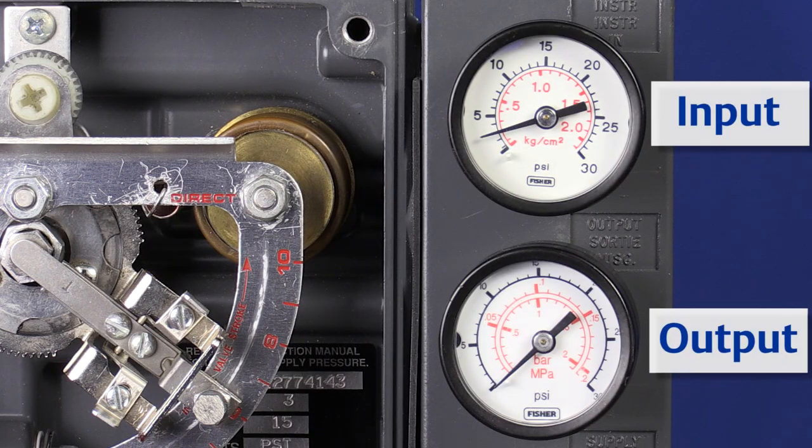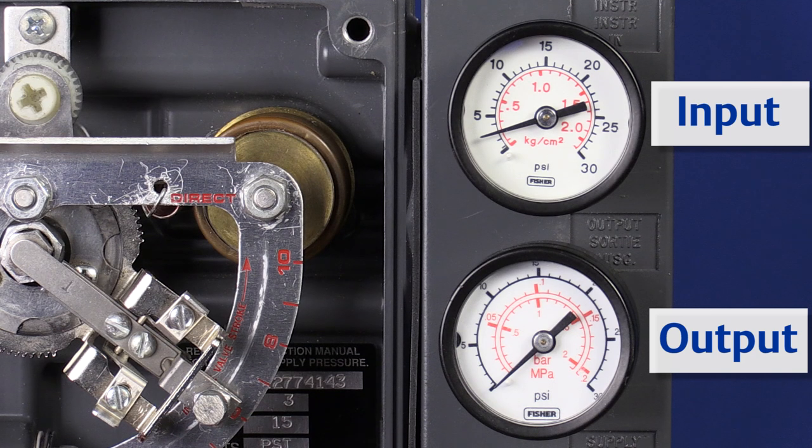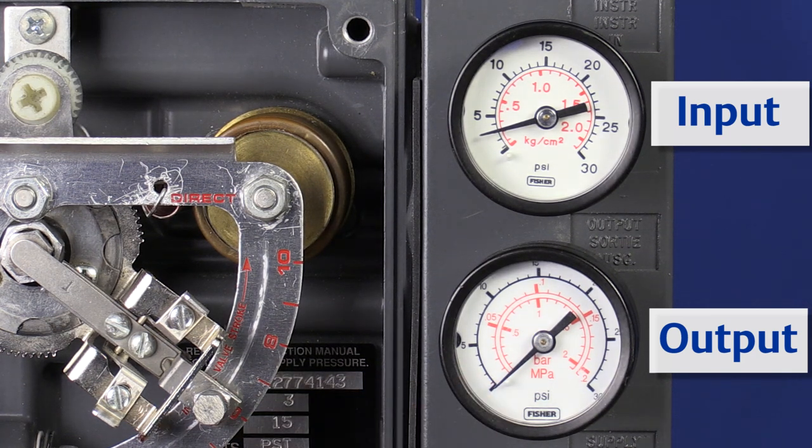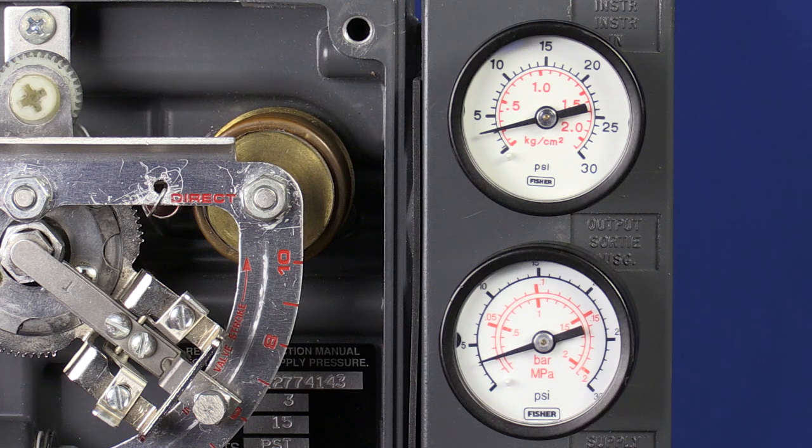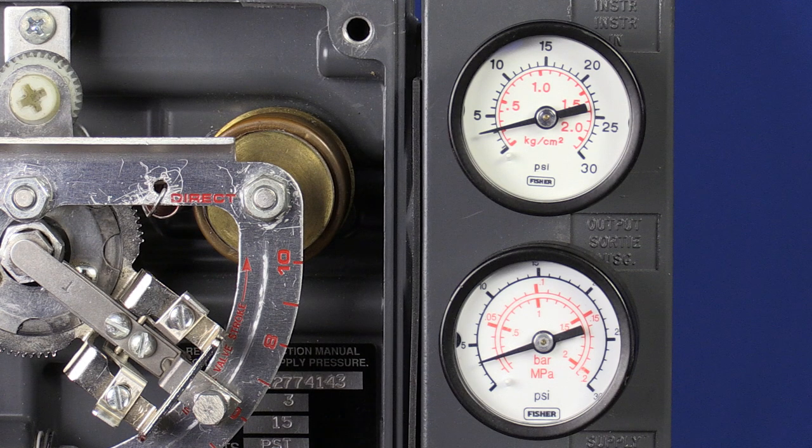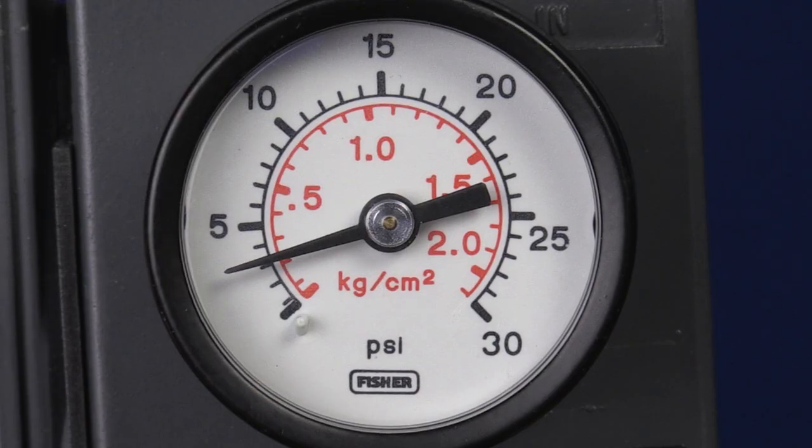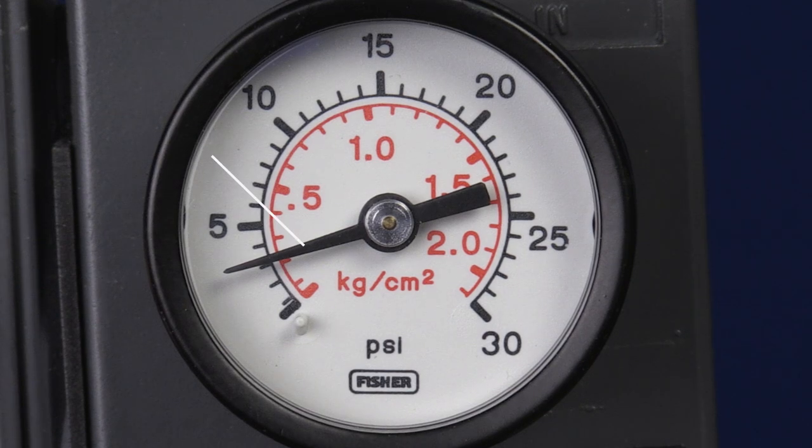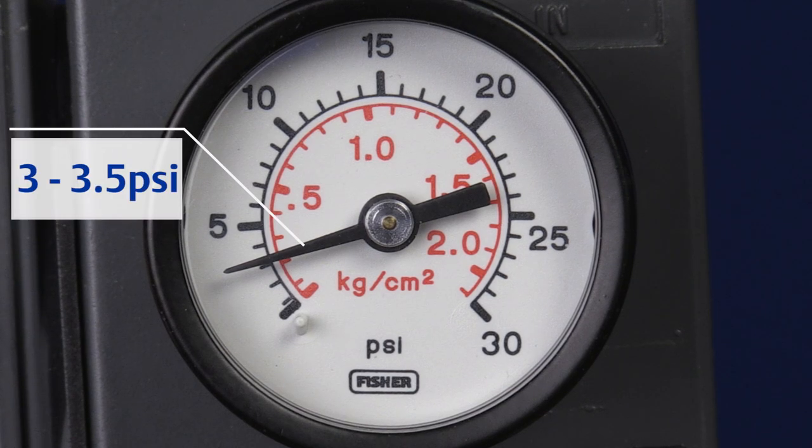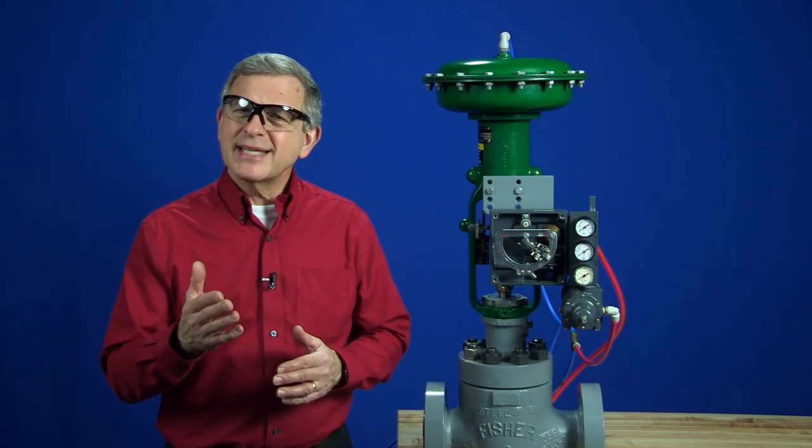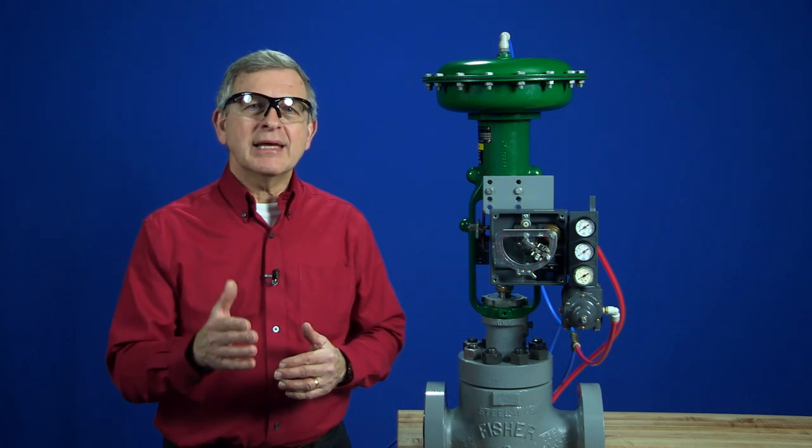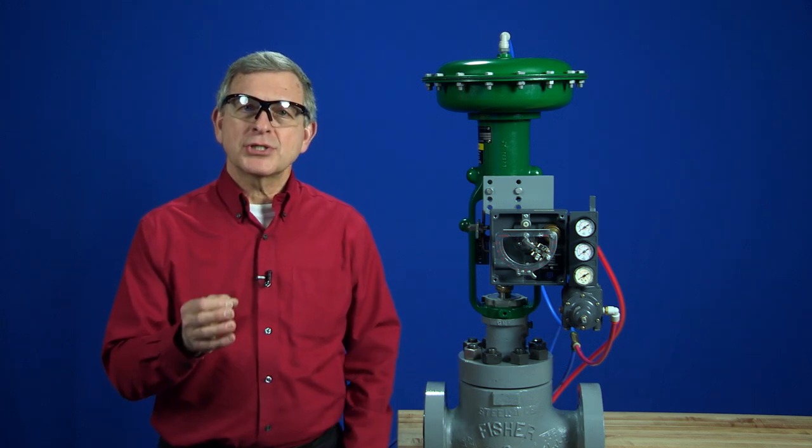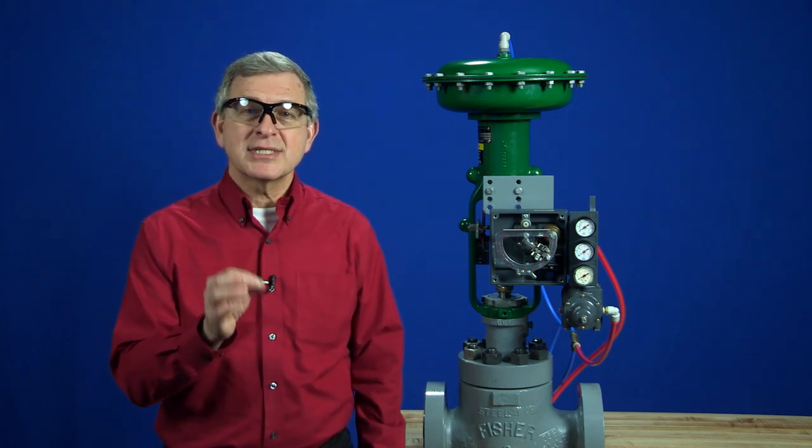Step four is to slowly increase the input pressure, but we'll watch the output pressure gauge. As soon as the output gauge needle moves, I stop the input and look at the input gauge. Ideally, it should be somewhere between three and three and a half psi.